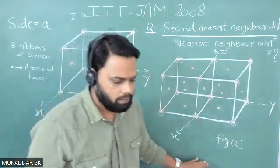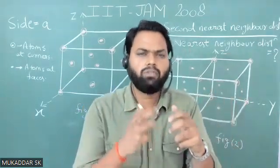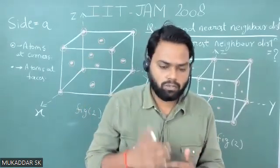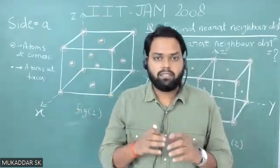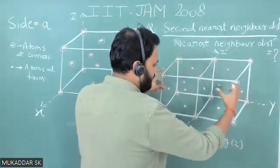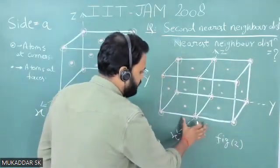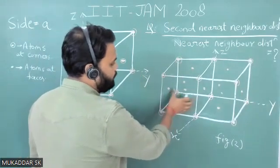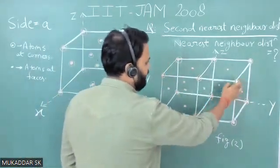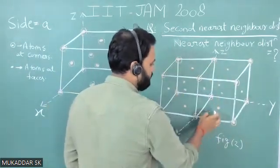What I have done is bring two FCC lattices together and joined them, just to get the feel of an infinite lattice — because in a solid, the lattice extends in an infinite manner. This is figure number two: the composition of two FCC lattices, with eight atoms at the corners and six atoms at the faces.